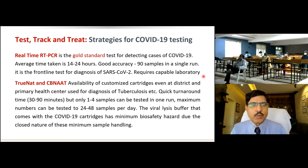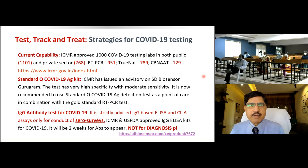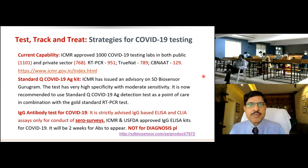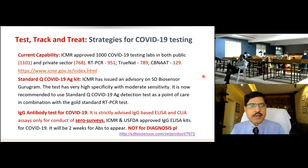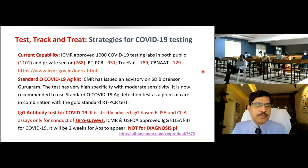As of October 1st, ICMR's testing capacity includes 1,100 public sector and 780 private sector labs empowered for RT-PCR, 951 centers for TrueNAT, and 129 centers for CBNAAT. These are the various laboratories available, and a clickable link in the presentation lets you check the current list of approved testing laboratories.